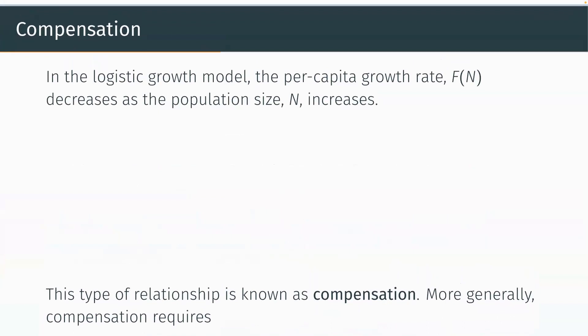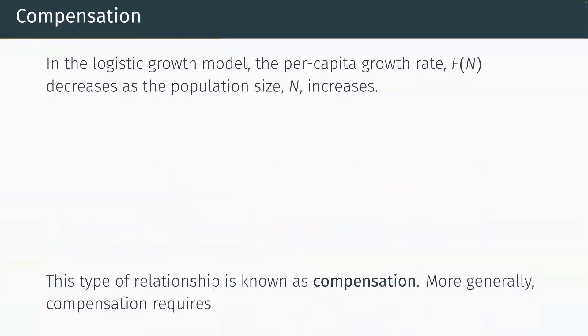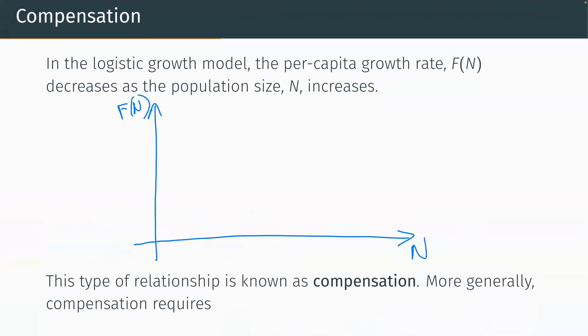In our logistic growth model, our per capita growth rate decreases as the population size increases. So what does that look like? That looks like a straight line — as we increase the population size, the growth rate is decreasing. This is known as something called compensation.